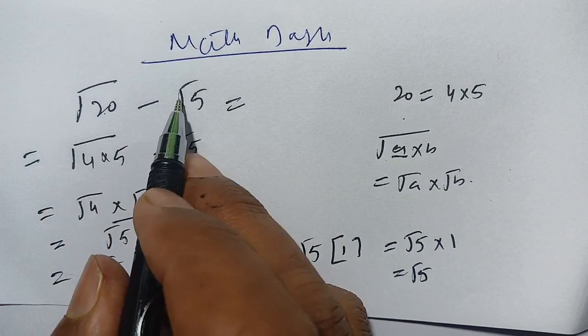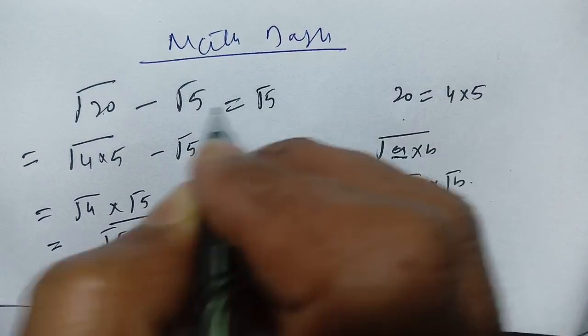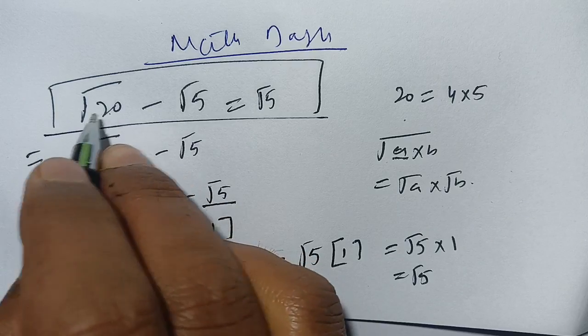Thus square root of 20 minus square root of 5 is equal to square root of 5. This is the result of this radical problem.